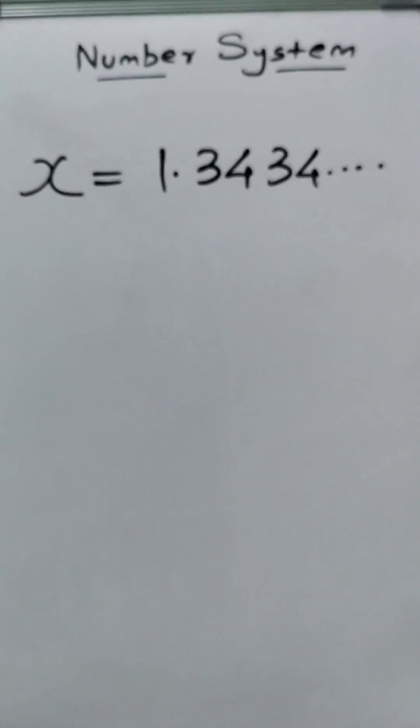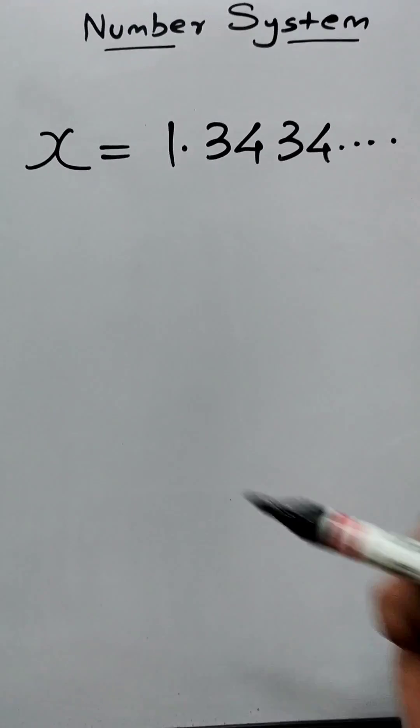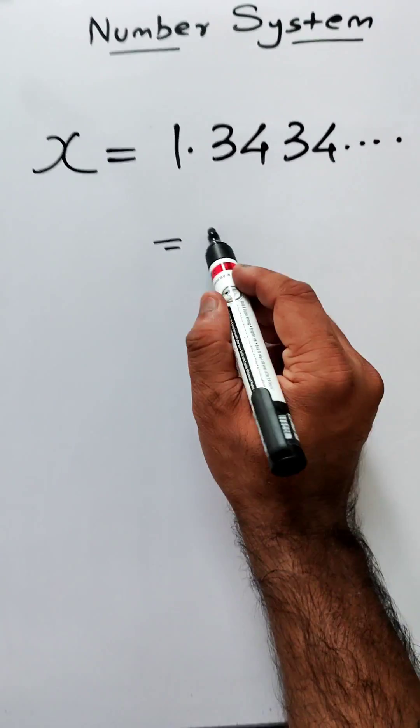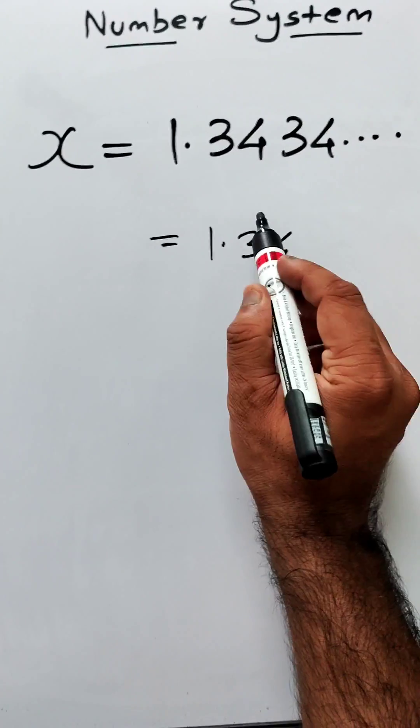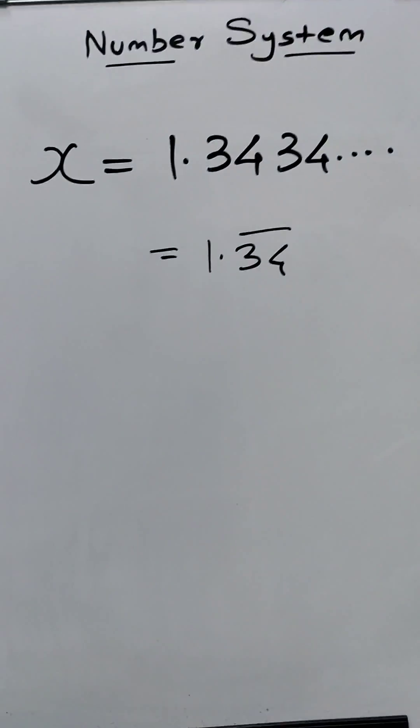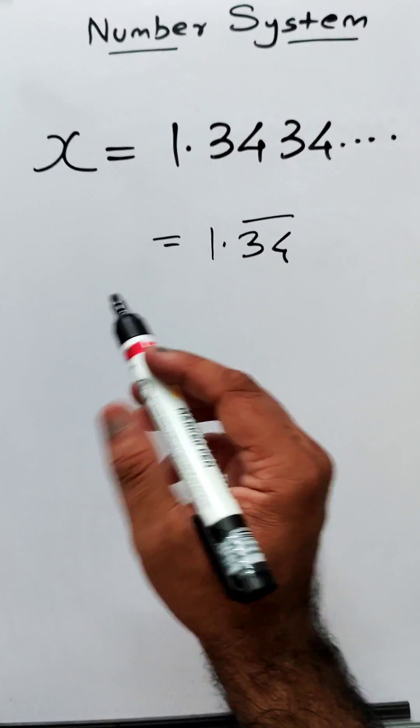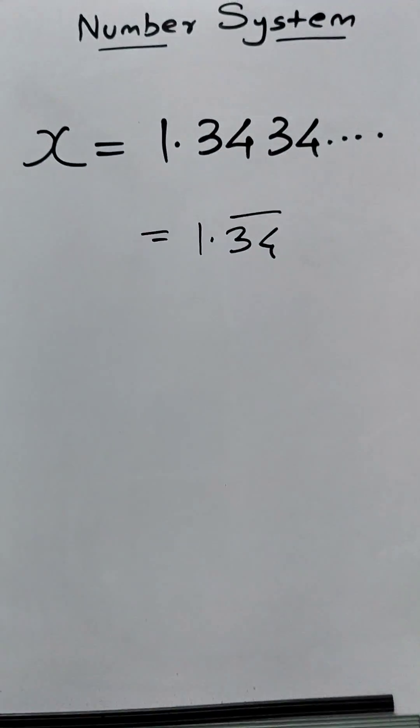So this is a rational number, not an irrational number. It is also written as 1.34 bar. The bar sign indicates that these two digits are repeating. Let us start the process to convert it into its rational form.